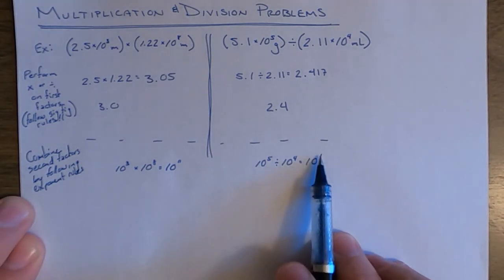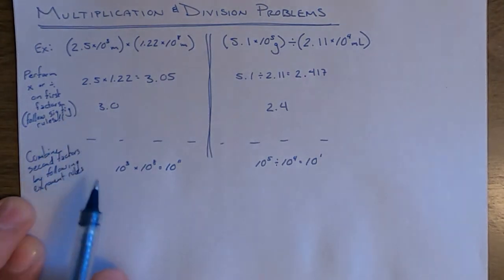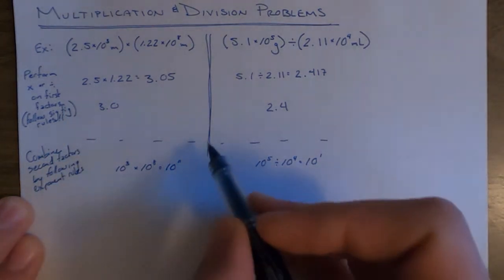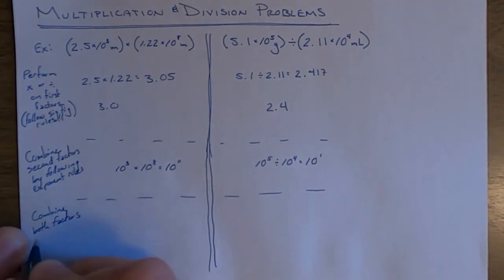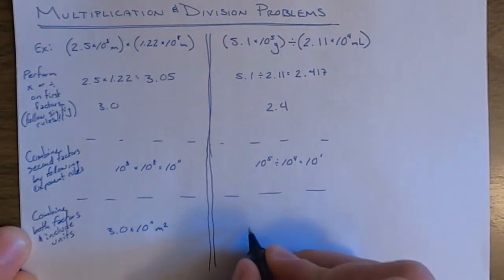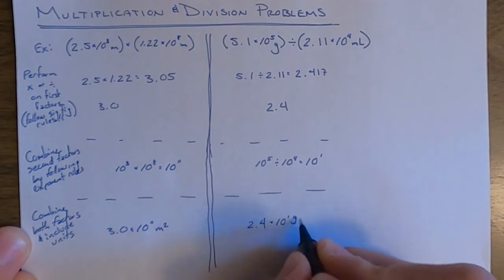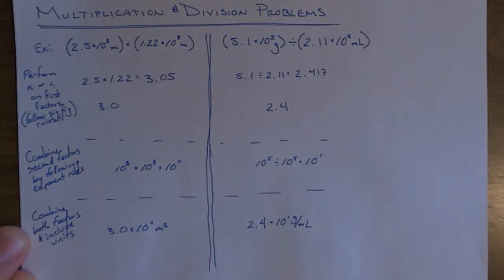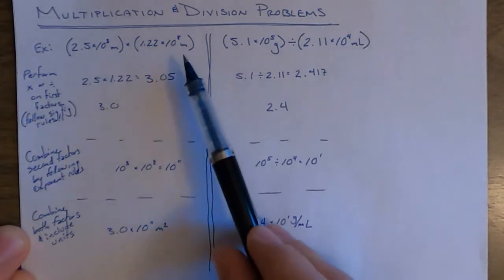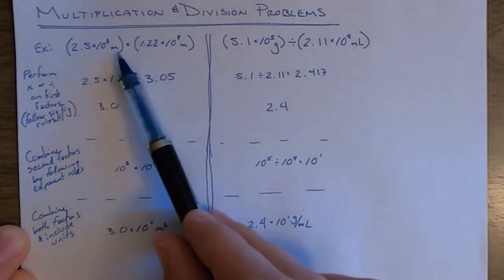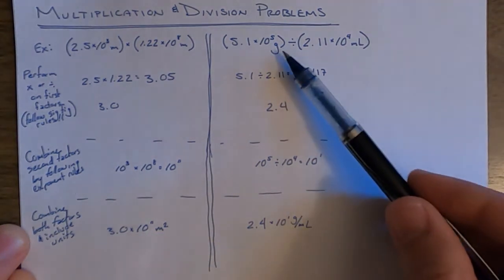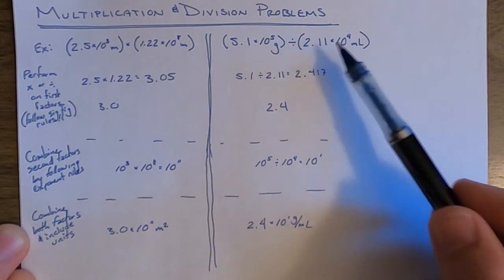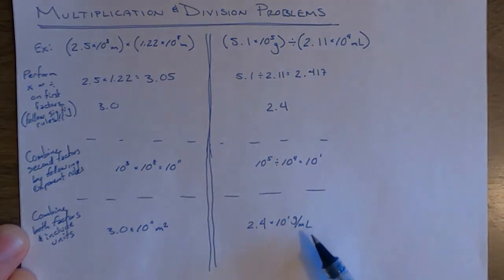The last step is to combine the first factor with the second factor and include the units. Keep in mind that when doing multiplication and division, units are either multiplied together — giving units like meters squared — or divided as a ratio, like grams divided by milliliters giving units of grams per milliliter.